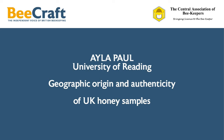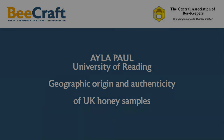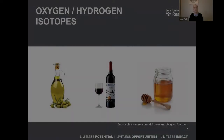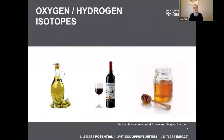We join Ayla Paul of Reading University at the beginning of her talk on the geographic origin and authenticity of UK honey samples, as she discusses the significance of hydrogen and oxygen isotopes to her work. Both isotopes show relationships between precipitation like rainwater and the geographic origin of foodstuffs.